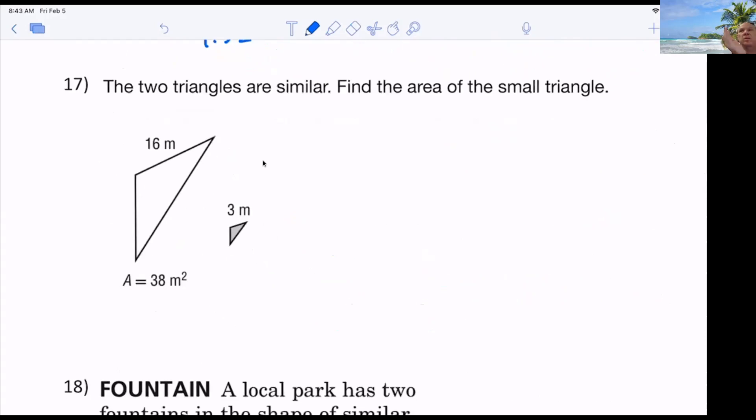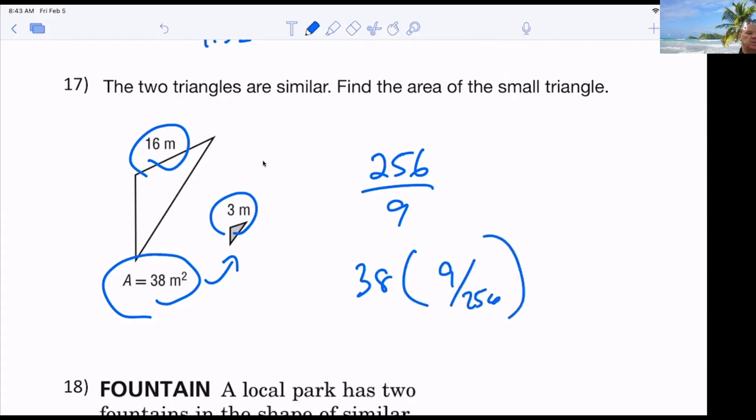So again, I'm 16 to 3. Right. So that's the ratio of the sides. So that means the ratio of the area is 256 to what? Nine. Now, remember, I'm going from the large to the small. So I want it to get smaller. So we're going to divide by that. Or because it's a fraction, we can say multiply by the reciprocal. So this is just 38 times nine over 256. And then, which is what fraction, please? Thank you. And that would be square meters.